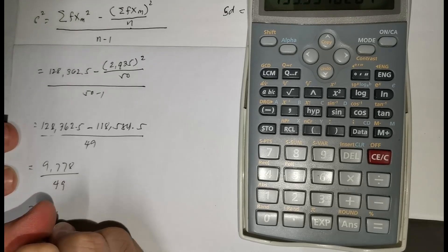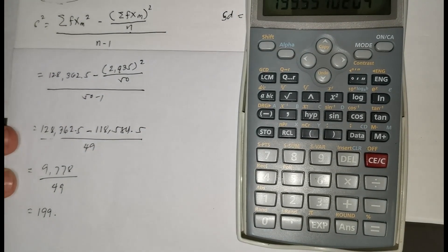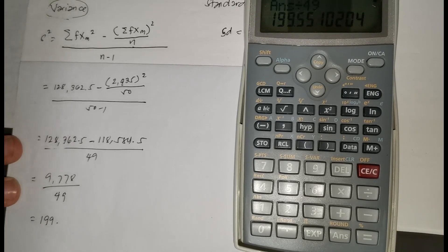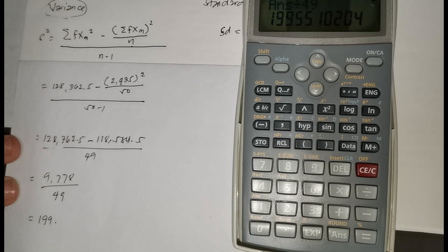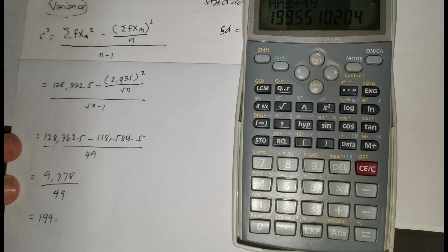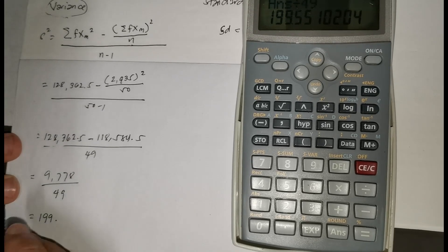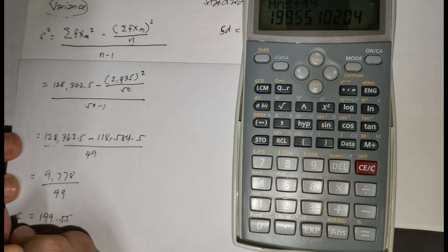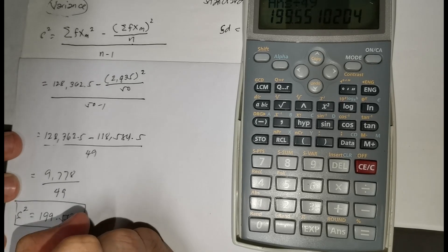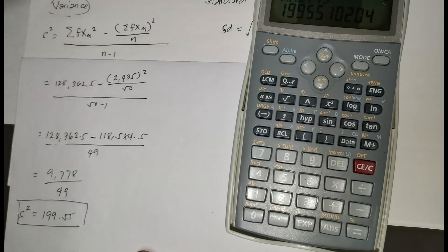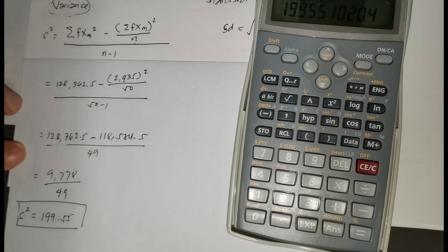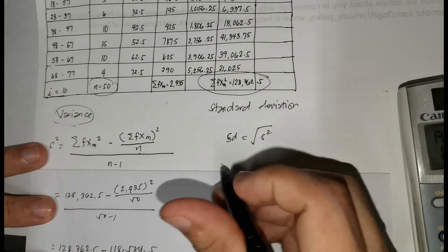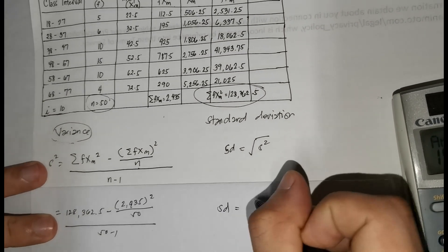We divide by 49 and finally we have our answer: 199.55. We will round our answer to two decimal places. This is now our s squared or our variance. In other words, the variance of this data set is 199.55.